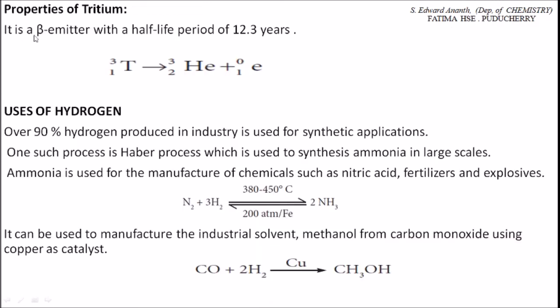Properties of tritium: Tritium is a beta emitter with a half-life period of 12.3 years. This is very important. Since tritium spontaneously emits beta rays, it is called a beta emitter.